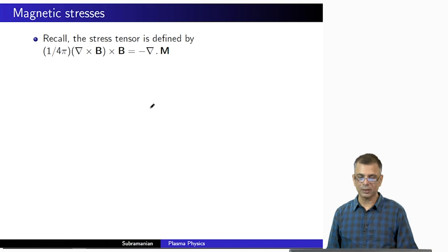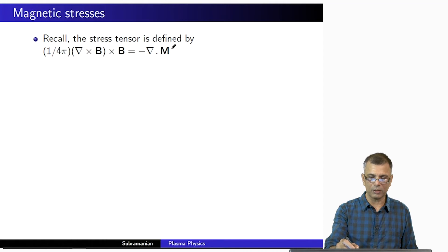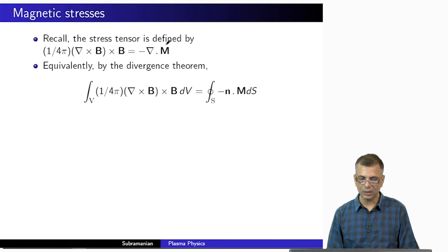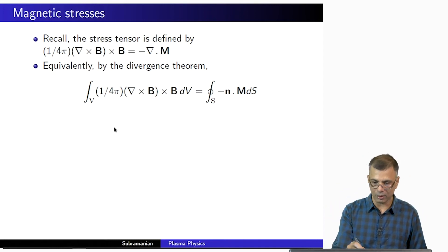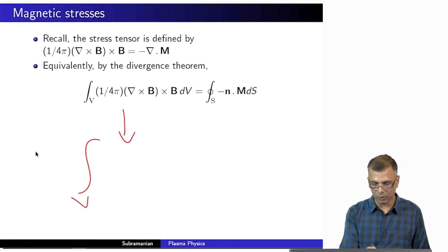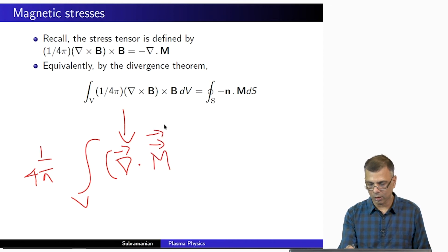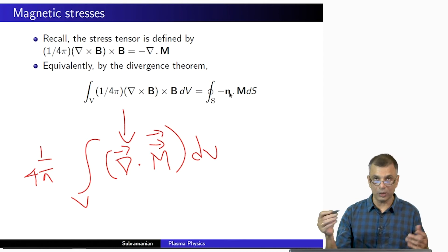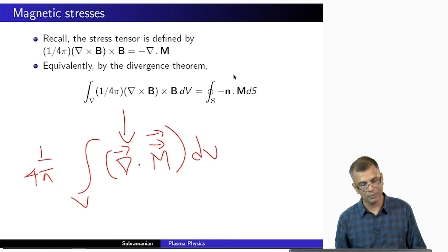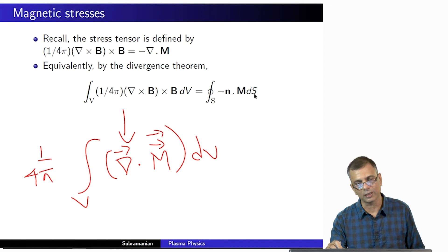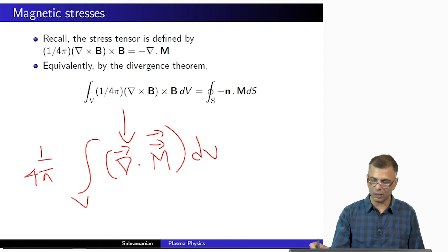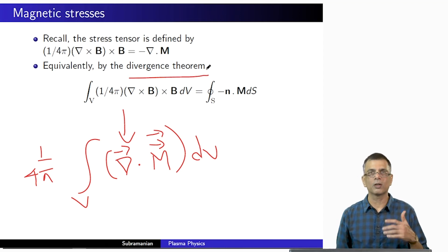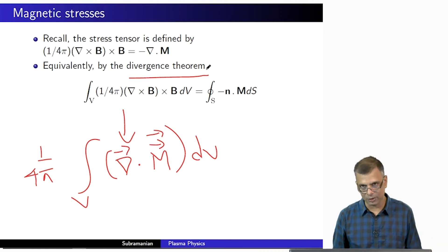Recall the magnetic stress tensor M defined in bold as a tensor. By the divergence theorem, the volume integral of the divergence of M becomes a surface integral: the integral of N·M dS, where N is the outward normal of the surface. We use the divergence theorem for a tensor — exactly the same concept as for a vector, no difference.